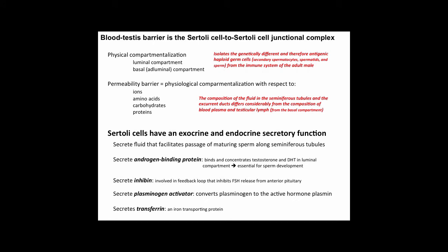Sertoli cells have both exocrine and endocrine functions. They secrete fluid that facilitates passage of maturing sperm along seminiferous tubules. They secrete androgen binding protein, which binds and concentrates testosterone and dihydroxytestosterone in the luminal compartment — essential for sperm development. They secrete inhibin, which inhibits FSH release from the anterior pituitary. They also secrete plasminogen activator, which converts plasminogen to the active hormone plasmin, and transferrin, an iron-transporting protein.